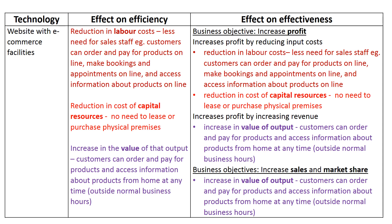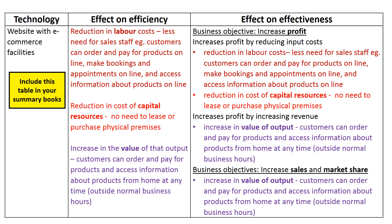Our second learning intention requires you to propose and justify technology strategies as ways of improving efficiency and effectiveness. To do this, you must be able to specifically relate the use of websites with e-commerce facilities separately to efficiency and effectiveness. That is the purpose of this table. Please include this table in your summary books, together with notes from the discussion which follows.